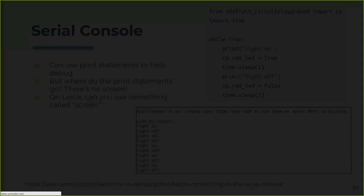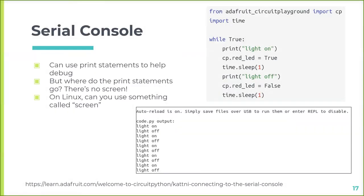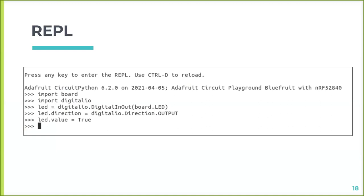Another really cool thing about CircuitPython: you can use the serial console to see output from print statements to help you debug. On Linux I used a program called 'screen' to show the serial console — there are instructions for other operating systems as well. Once you connect to the USB port, you can see the output in real time. In this same blinking LED example, it prints 'light on' and 'light off' as it cycles, so you can see exactly what's happening.